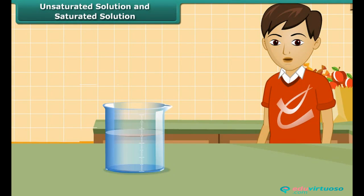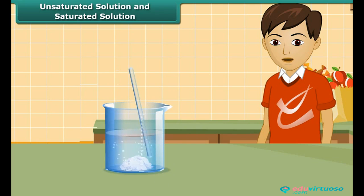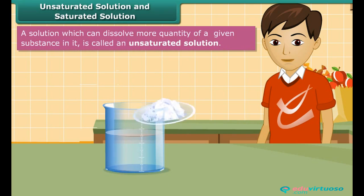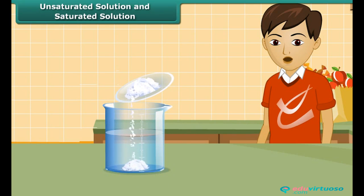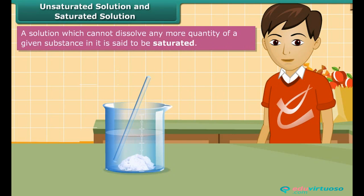Take a beaker and dissolve some amount of salt in it. Go on adding salt to the solution. As long as the salt is dissolved in water, the solution is an unsaturated solution. But a stage will soon come when you will not be able to dissolve more salt in the solution. At this stage, the solution becomes saturated. A solution is said to be saturated if it cannot dissolve any more quantity of the given substance in it.